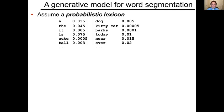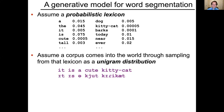We begin our generative model for word segmentation by assuming a probabilistic lexicon — simply a frequency-weighted dictionary or vocabulary of words in the language. We then assume that a corpus comes into the world through repeated sampling from that lexicon as a unigram distribution. We know this is a terrible model of actual language, but it turns out that it's powerful enough to do great things in a word segmentation context.